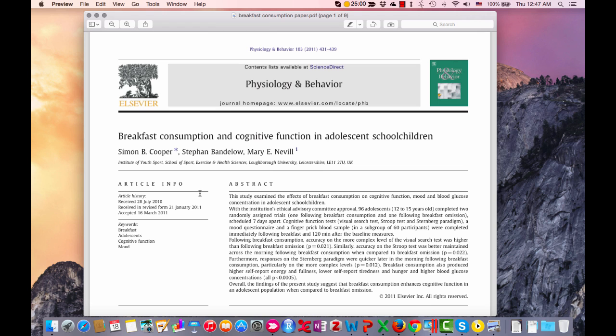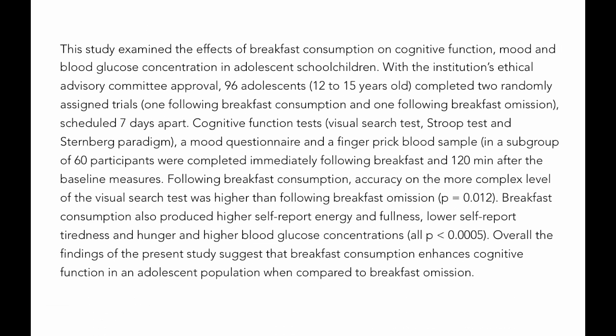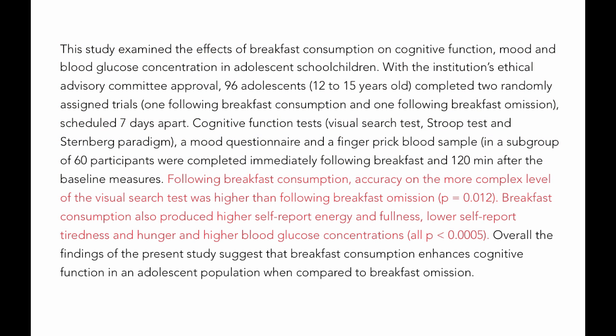This next example is a research paper about the effect of eating breakfast on thinking. The abstract is shown in a little bigger type so you can read it more easily. The first three sentences explain the purpose of the study and a little bit about the method. The next part explains the results in two sentences, which is a little more detailed than the other example. Finally, the last part is an overall summary of the meaning of the research.